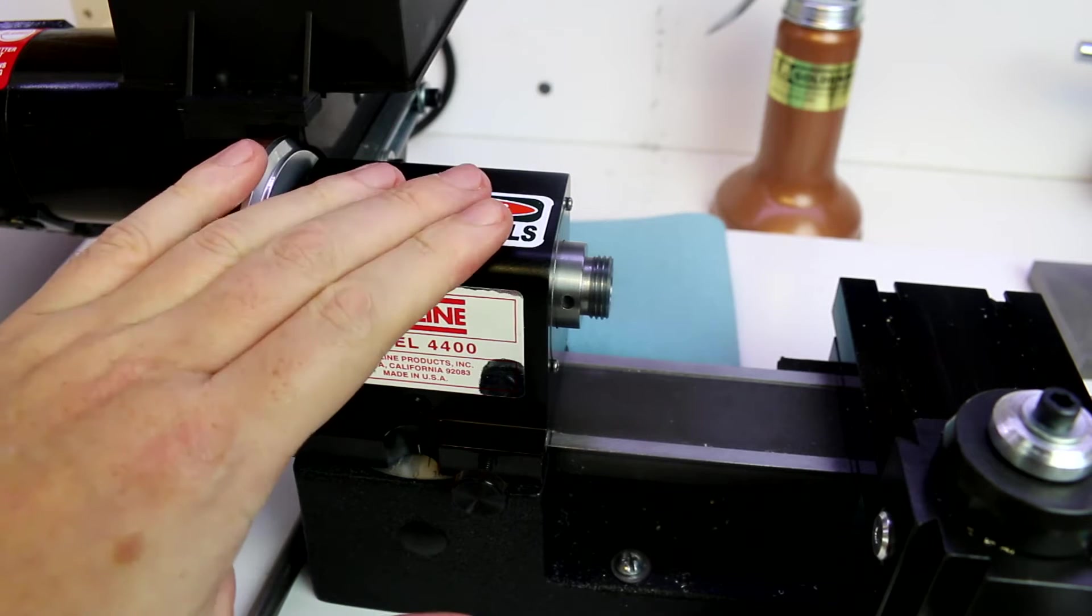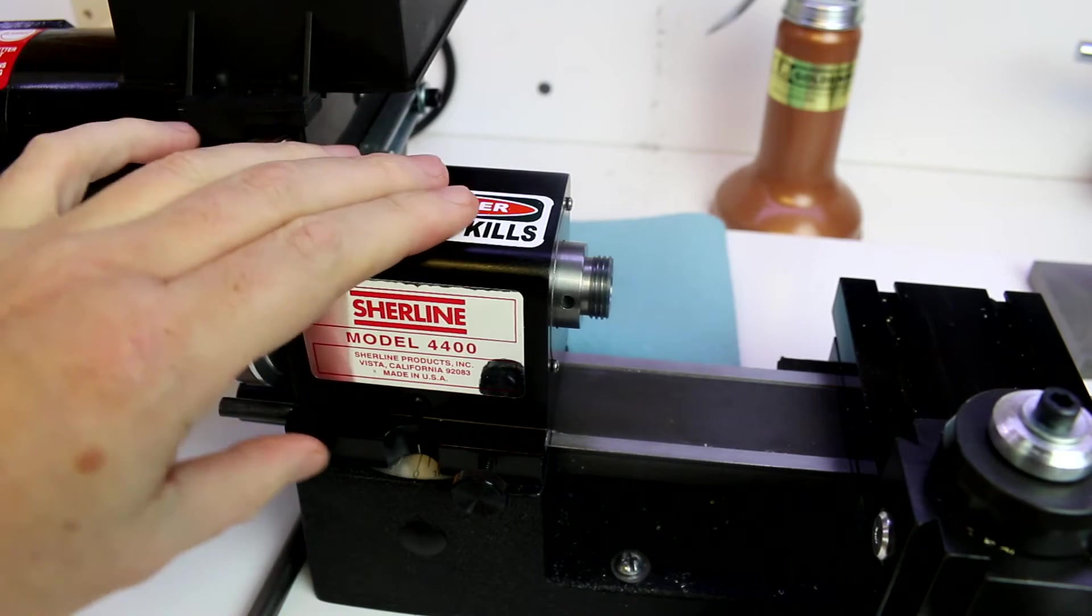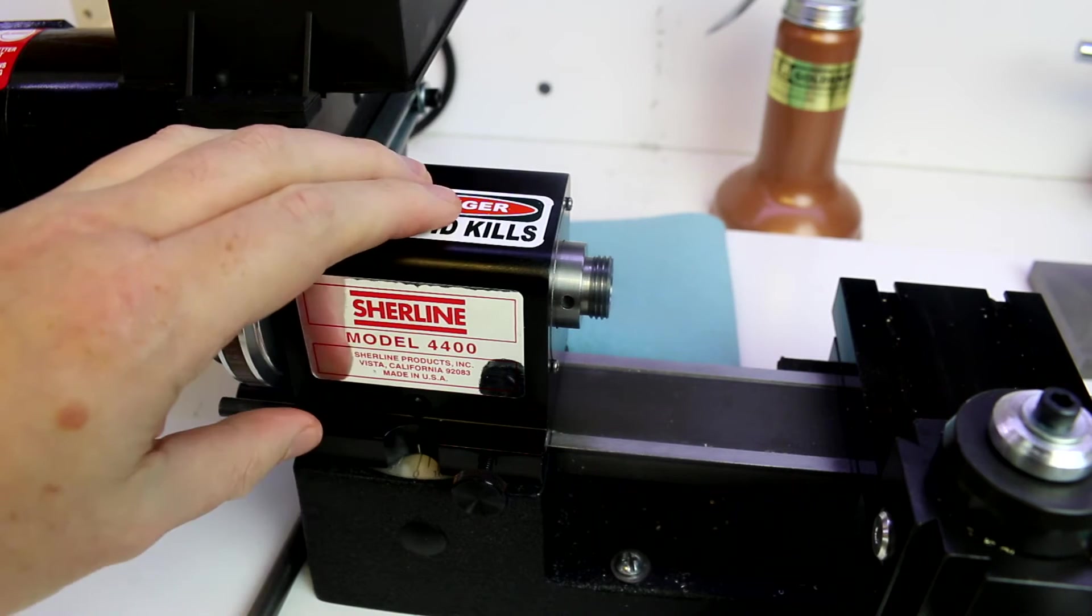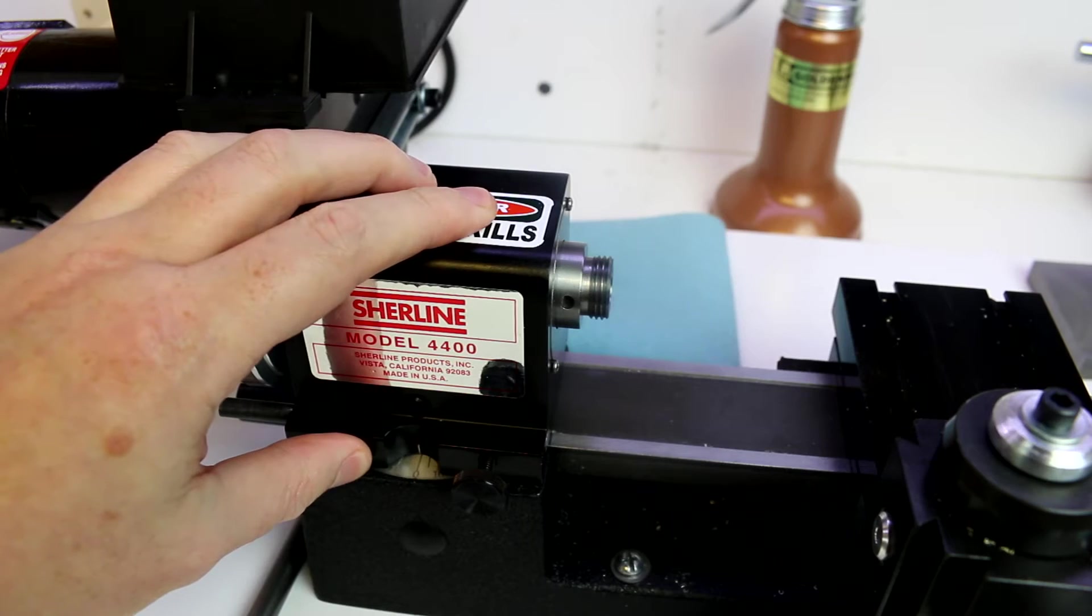So we're going to talk about turning tapers and there are a variety of ways to do it. The Sherline is fairly unique in that it's got the ability for the head to rotate. And that's what we're going to first start out as our method of turning a taper or a chamfer.